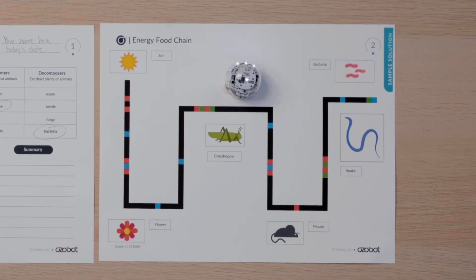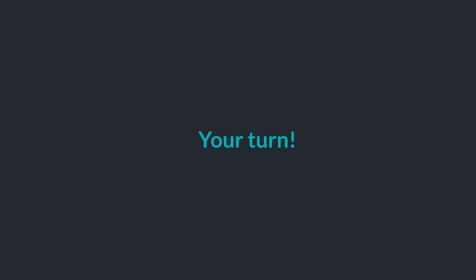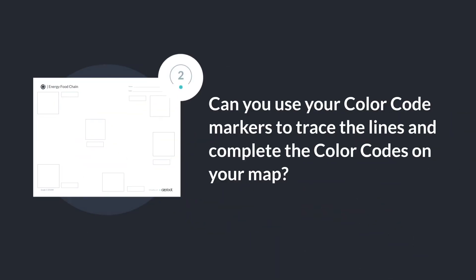The amount of energy that passes between organisms decreases as it moves along the food chain. I used blue boxes of color to show how the amount of energy decreases as it moves up the food chain. Can you use your color code markers to trace the lines and complete the color codes on your map?